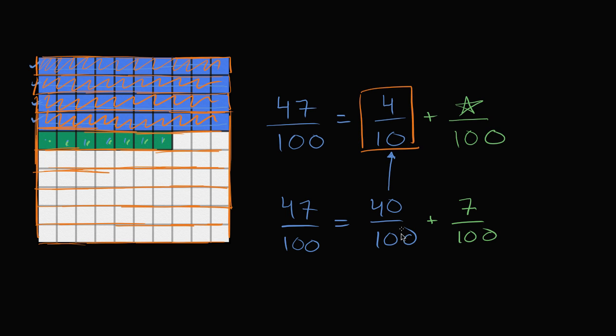Another way you could think about it, when you go from hundredths to tenths, each 10 hundredths are equal to 1 tenth. So you're dividing both the denominator by 10, when you go from hundredths to tenths, and you'd also divide the numerator by 10. So 40 divided by 10 is 4, 100 divided by 10 is 10. So hopefully you're convinced that 40 hundredths is the same thing as 4 tenths.